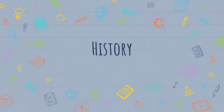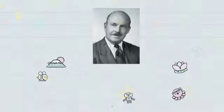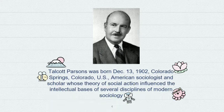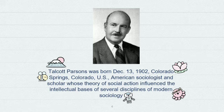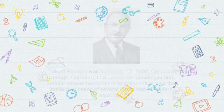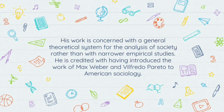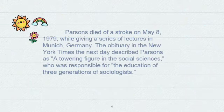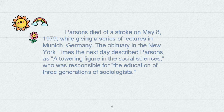Before we discuss the theory, let's look at the person first. Talcott Parsons was born on December 13, 1902 in Colorado Springs, Colorado. He was an American sociologist and scholar whose theory of social action influenced the intellectual basis of several disciplines of modern sociology. His work is concerned with a general theoretical system for the analysis of society rather than with narrow empirical studies. He is credited with having introduced the works of Max Weber and Wilfredo Pareto to American sociology. Parsons died of a stroke on May 8, 1979 while giving a series of lectures in Munich, Germany. The obituary in the New York Times the next day described Parsons as a towering figure in the social sciences who was responsible for the education of three generations of sociologists.